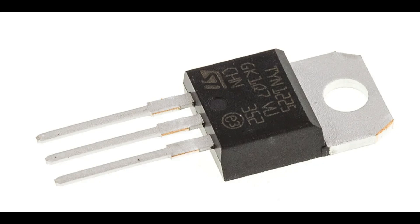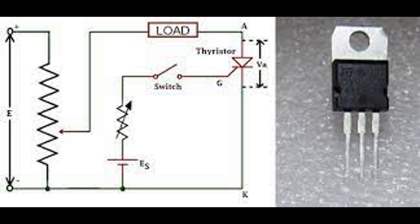Once J2 breaks down, it becomes forward biased and the entire thyristor PNPN structure becomes conductive, allowing current to flow freely from anode to cathode. Latch-on effect: the thyristor remains in the conducting state even after the gate pulse is removed; it will stay on as long as the current through the device exceeds the holding current. Result: the device is in the on state, allowing forward current to flow.